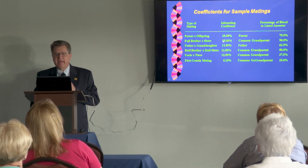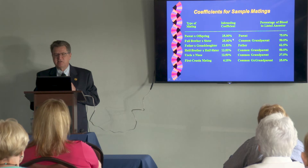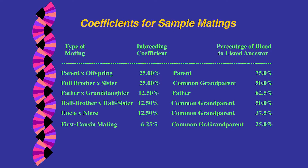In your handouts, you can see that parent-to-offspring or full brother-full sister has a 25% inbreeding coefficient; father-granddaughter, half brother-half sister, and uncle-niece each have 12.5%; and full cousins have 6.25%. These are also the relationship coefficients — the percentage of blood from each of those individuals in a pedigree.